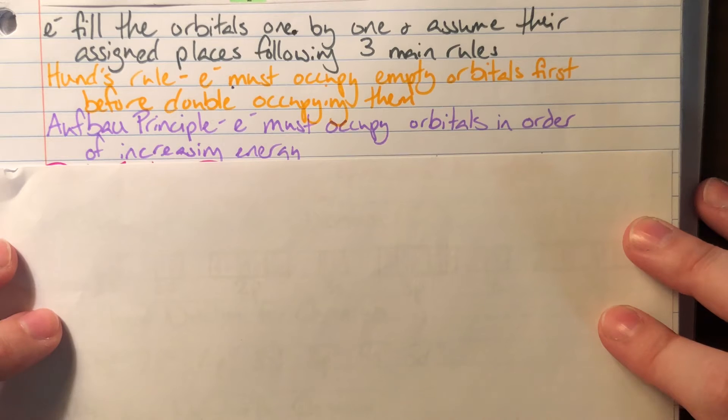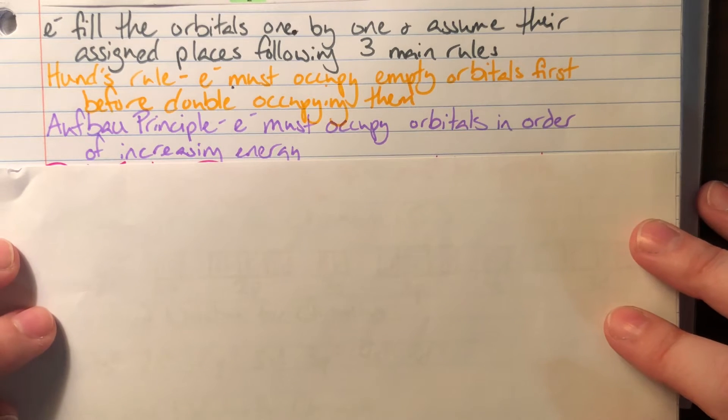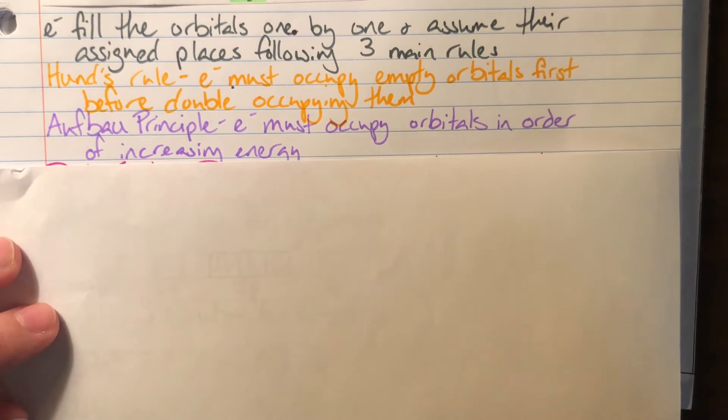My next rule is going to be the Aufbau principle. My Aufbau principle states that electrons must occupy orbitals in order of increasing energy. This basically means that I am going to have a strong preference for lower energy orbitals if at all possible. I'm going to want to expend as little energy as possible, which means I will fill the lower energy orbitals, as in 1s, before I ever get to something that's much higher energy, as in 5p.